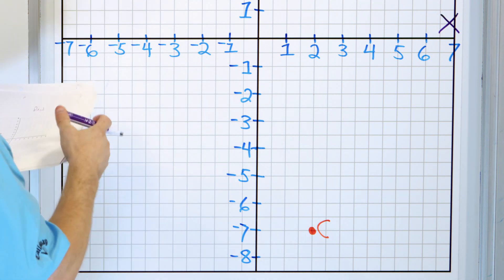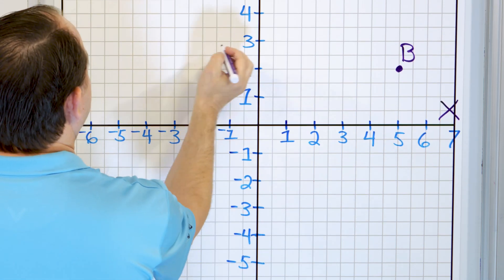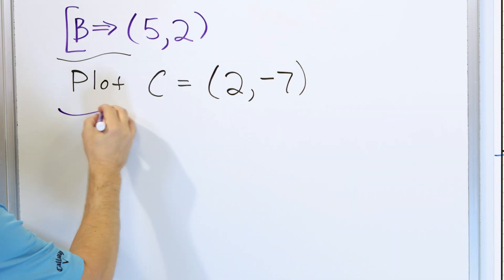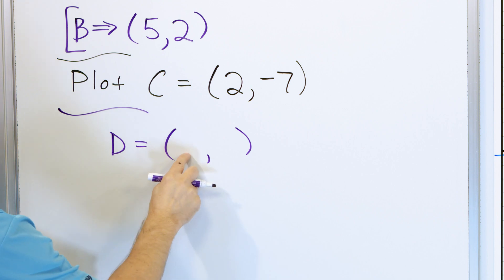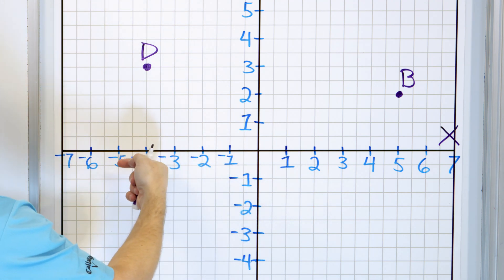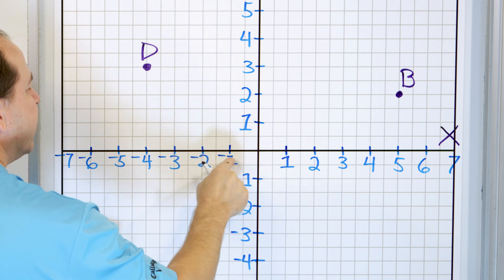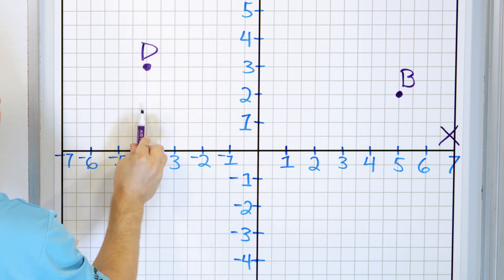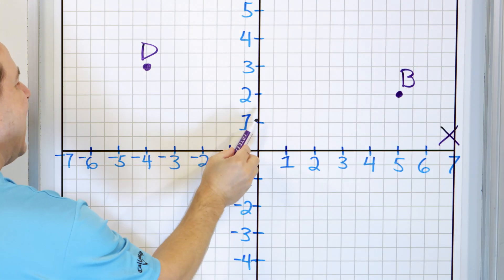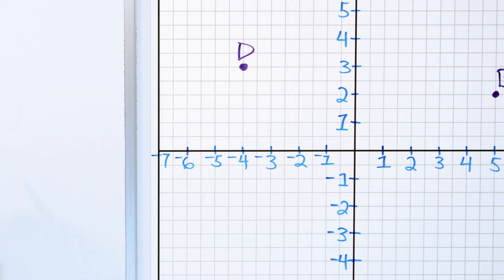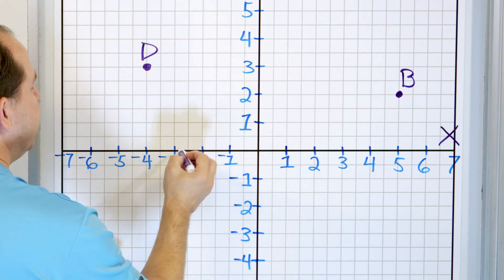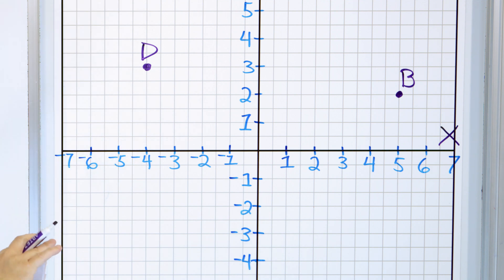Next, I've put a point on the board and we'll read its coordinates. This is point D. Starting at zero, we go along x — but notice these are negative numbers, so the x component will be negative. We go negative one, two, three, four — we stop at negative four. Then the y value is positive: positive one, two, three. So the coordinates of point D are negative four comma positive three.